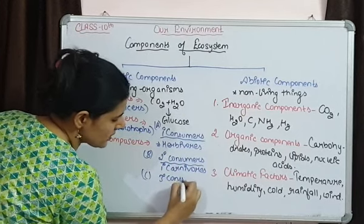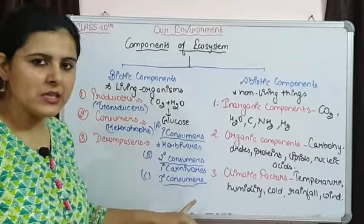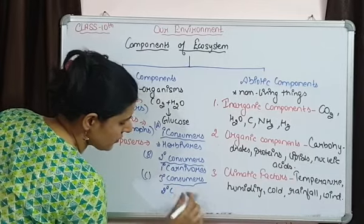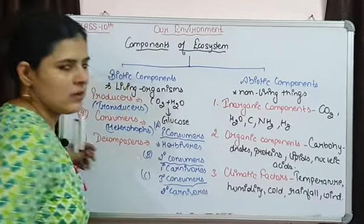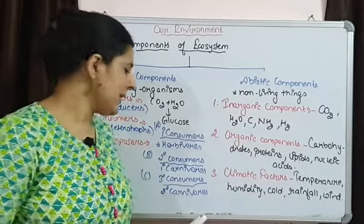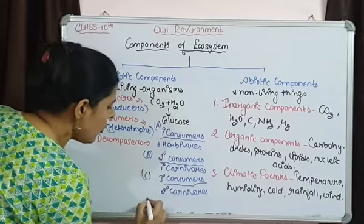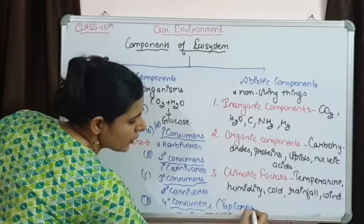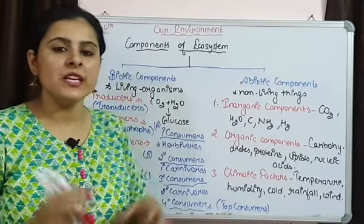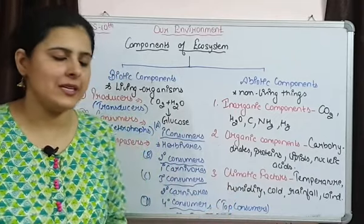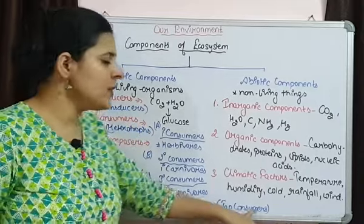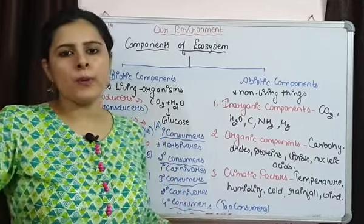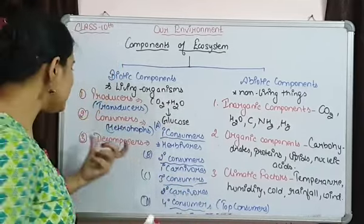Tertiary consumers feed on secondary consumers (primary carnivores) and are called secondary carnivores — examples include big fishes and snakes. Last are quaternary consumers, also called top consumers — those organisms on which no other organism in the ecosystem feeds. They lie at the top of the food chain. Examples include tigers, lions, eagles, and hawks.